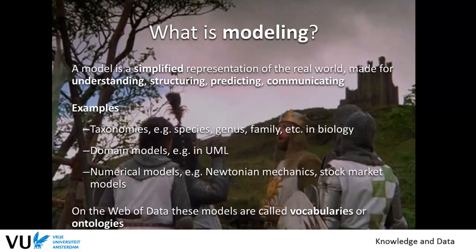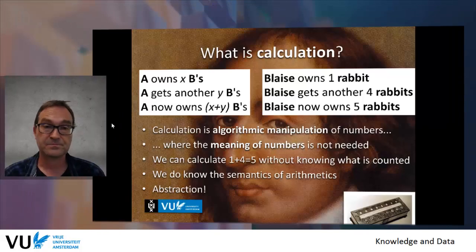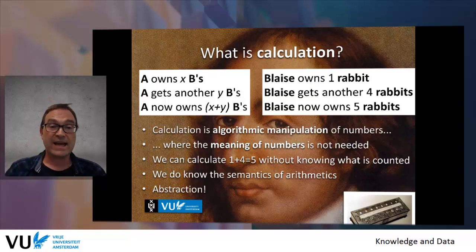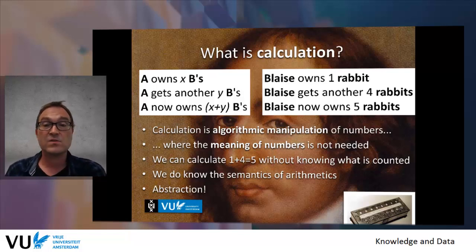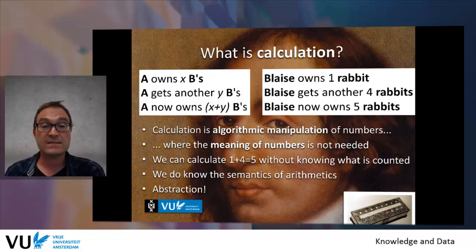For example, we have taxonomies where species are organized in genera and families — a typical thing in biology: every lion is a mammal and every mammal is an animal. There's also domain modeling as in numerical models, statistics, stock markets, and so forth. The web of data uses what are called vocabularies or ontologies to model this knowledge. Once we have these knowledge bases modeled as knowledge graphs, we can calculate on the basis of a general understanding of meaning — we know the semantics of the arithmetics without needing to know what the instances are. If a owns x b's and gets another y of b's, then a now owns x plus y b's — it doesn't matter who a is or what the b's are.